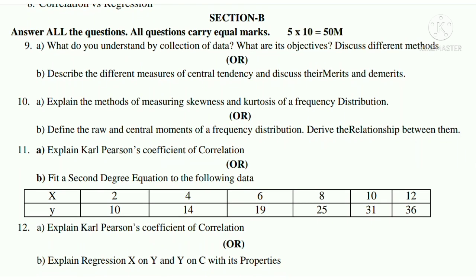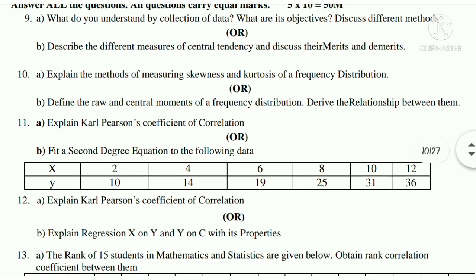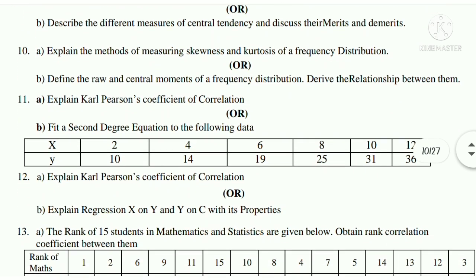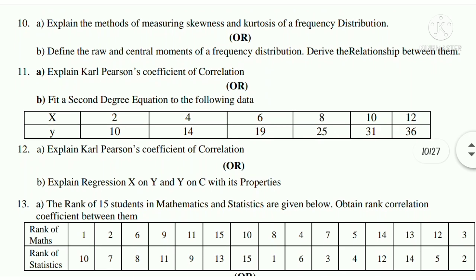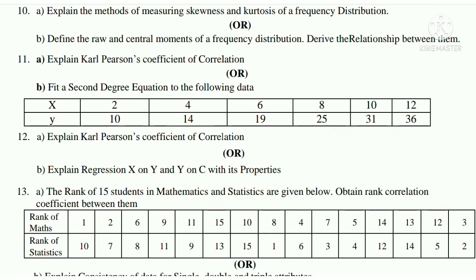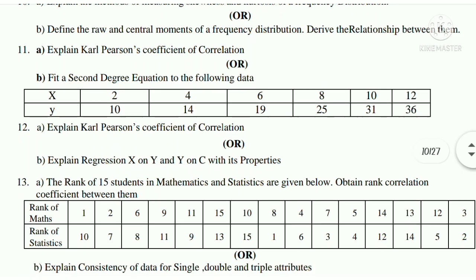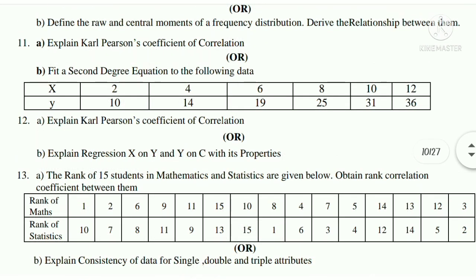Twelfth B: explain regression X on Y and Y on C with its properties. Thirteenth: the rank of 15 students in mathematics and statistics. Same question with some changes in theme and numbers. Thirteenth B: explain consistency of data for single, double, and triple attributes.